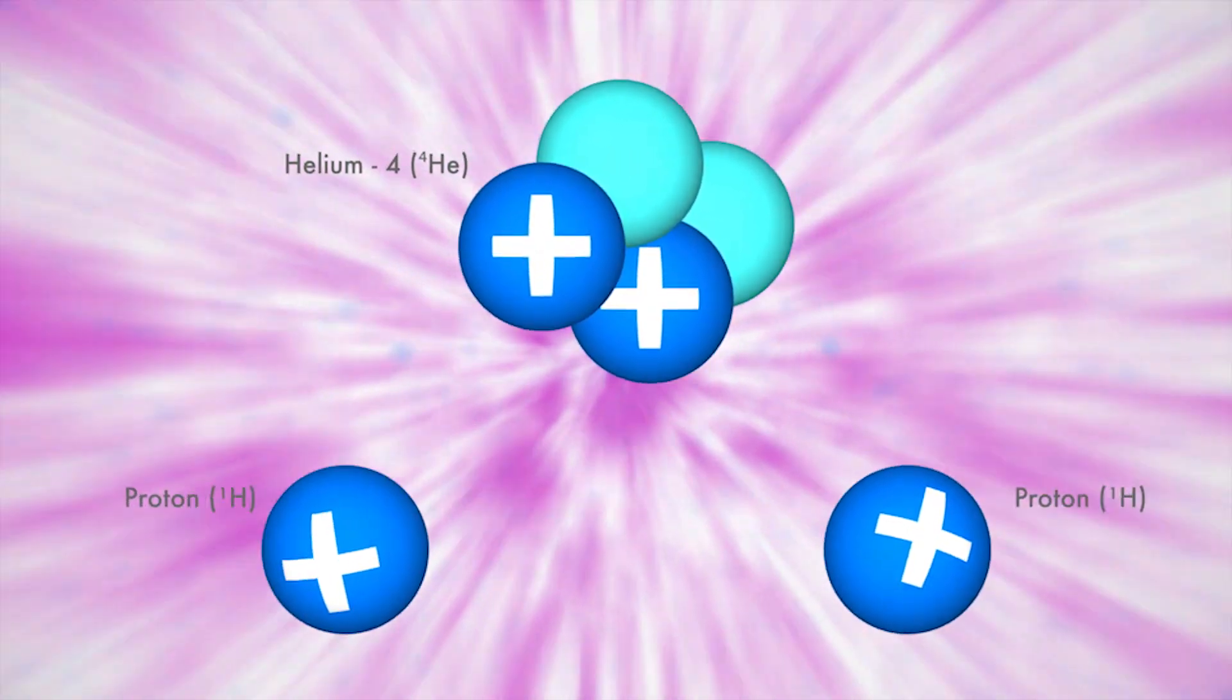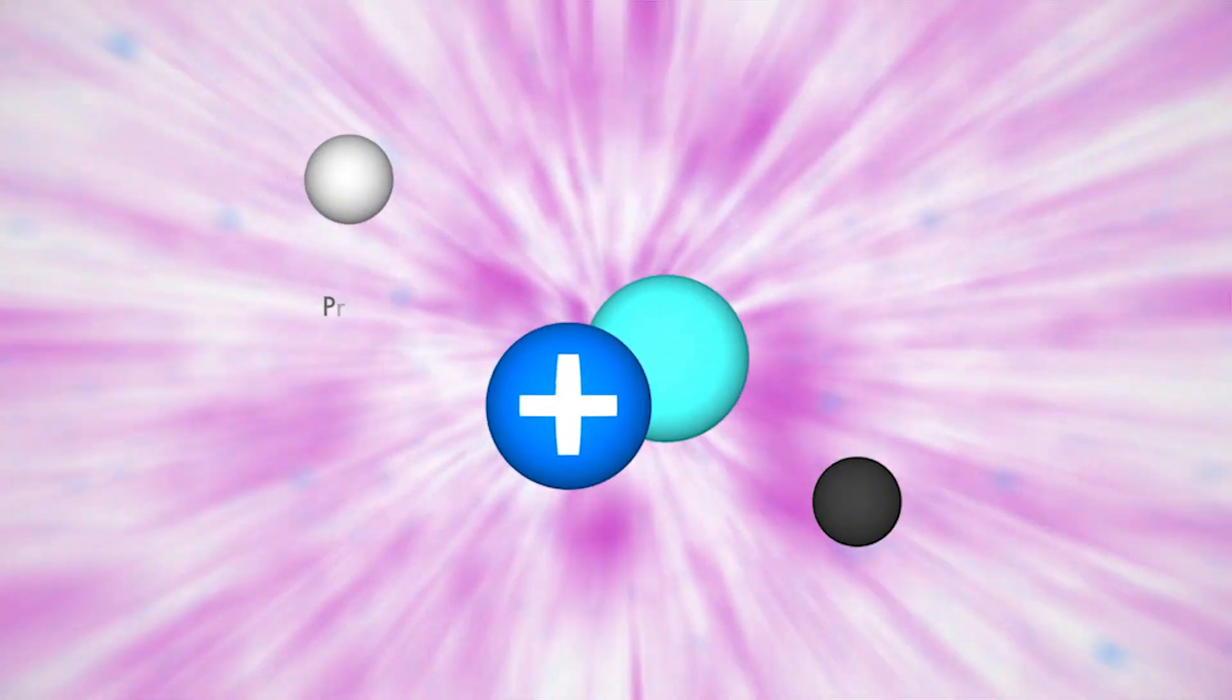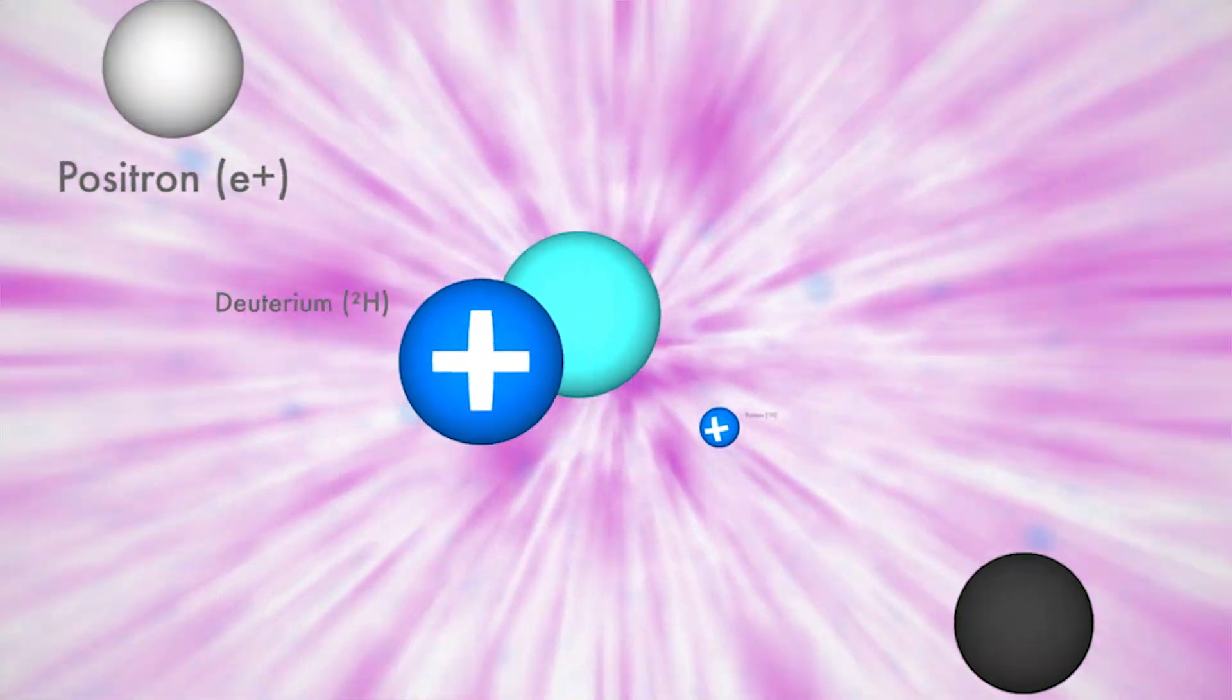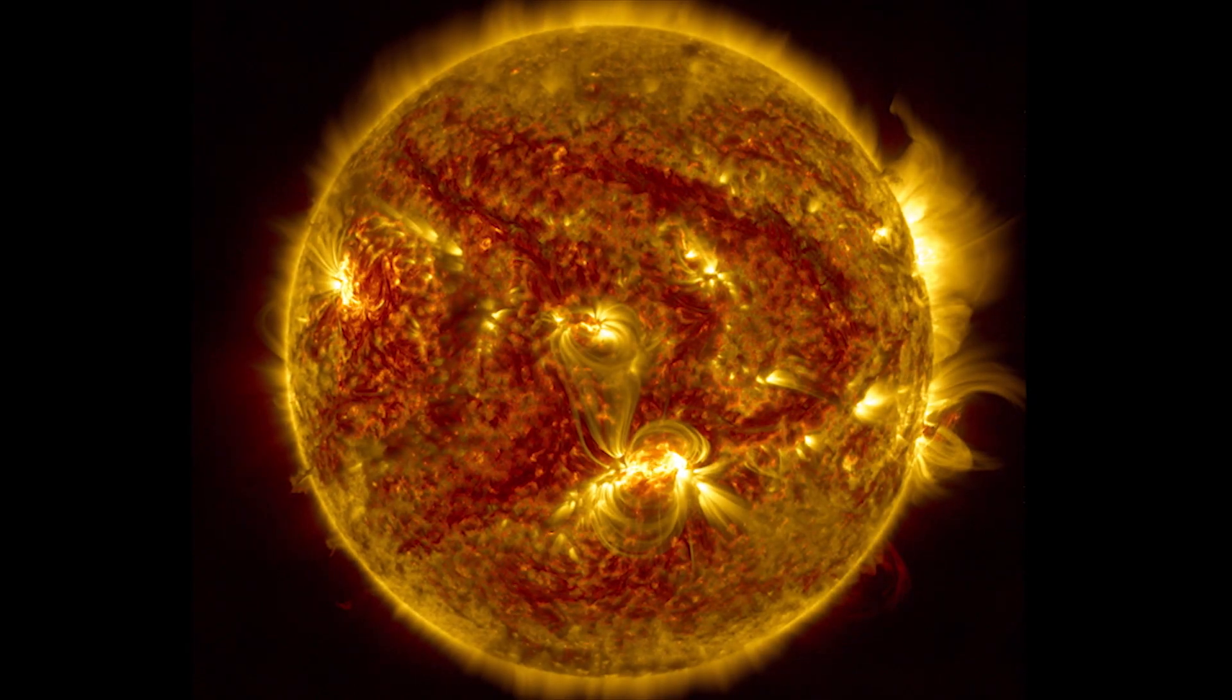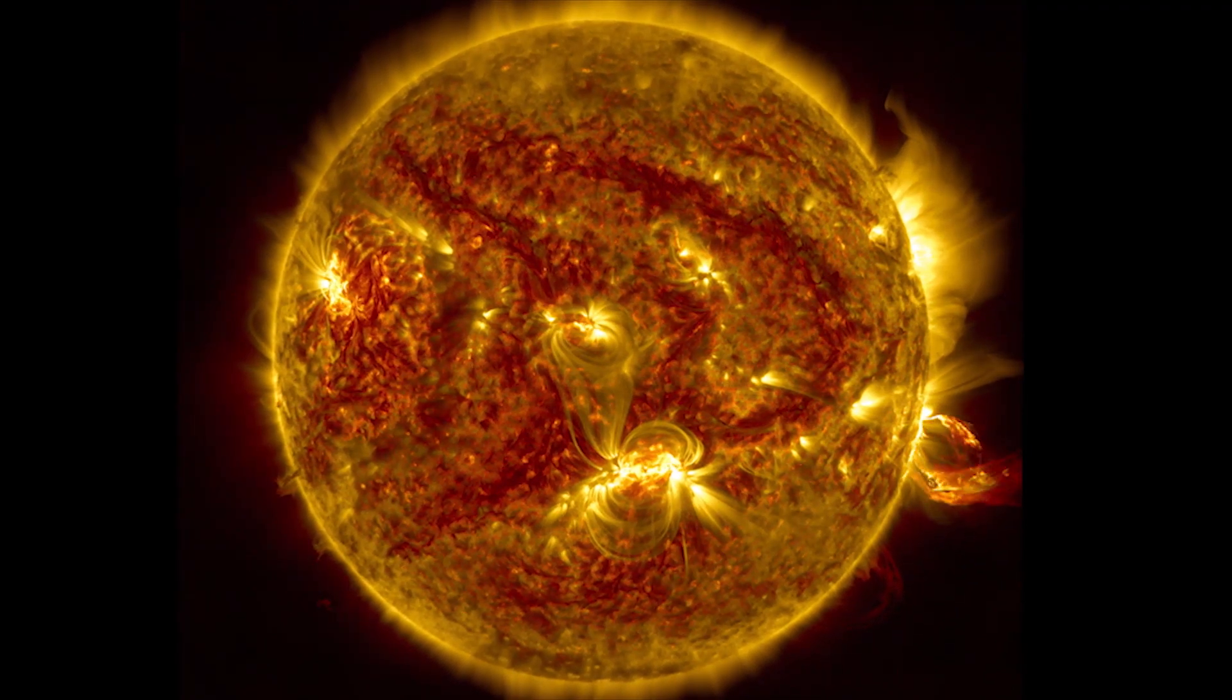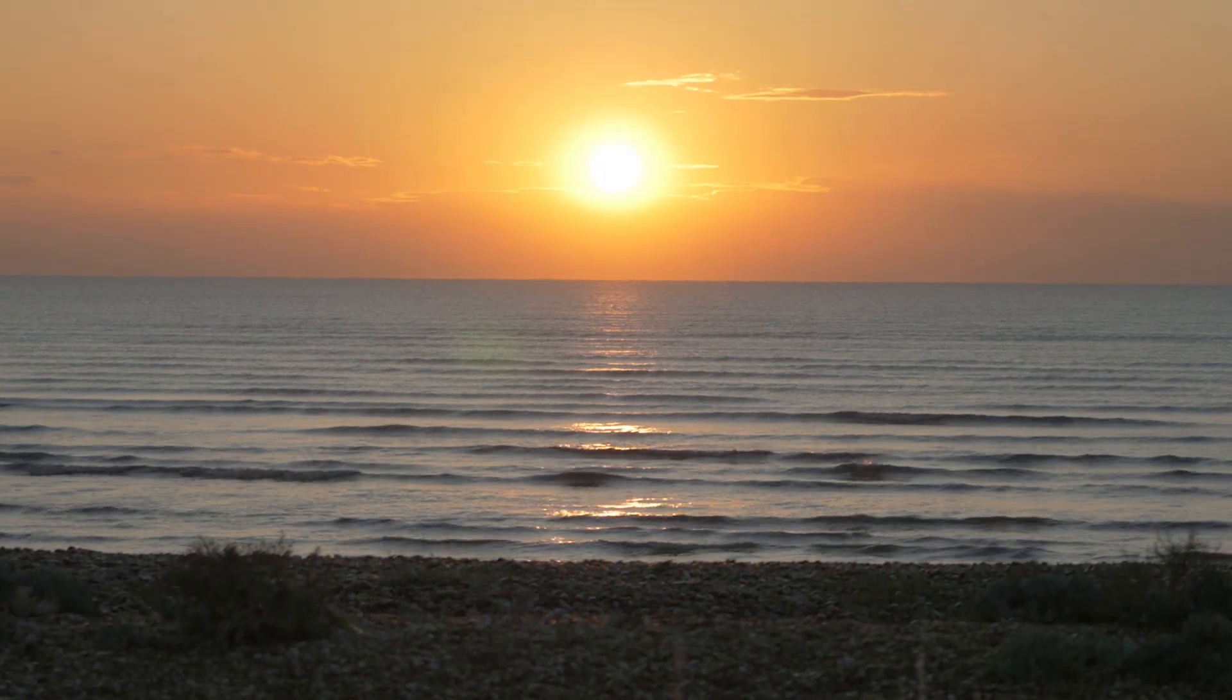Partly because when two protons fuse to form deuterium, one of them has to turn into a neutron and the probability of this happening is very small. The Sun gets away with it because it is enormous, so even a tiny probability is enough and the Sun has time. On Earth we need to look for more efficient fusion reactions.